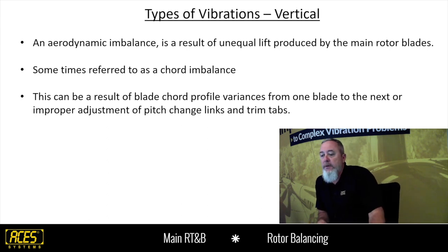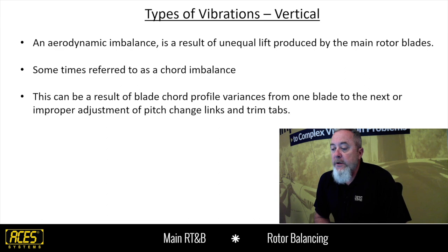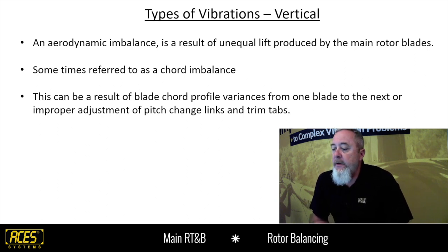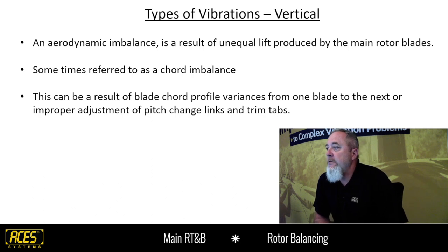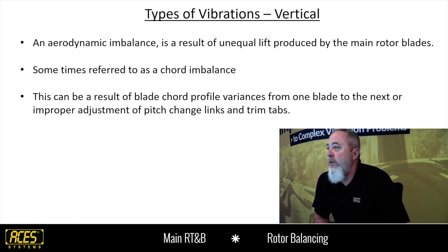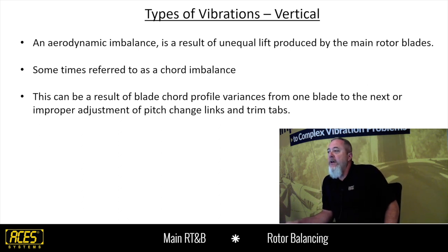Let's talk about types of vibrations. Vertical vibration is generically defined as an aerodynamic imbalance as a result of unequal lift produced by the main rotor blades. It can also be referred to as a cord imbalance. This is typically the result of a blade cord profile variance from one blade to the next — either by manufacturing, one blade being new and one old and worn, or improper adjustment of the pitch links and trim tabs.